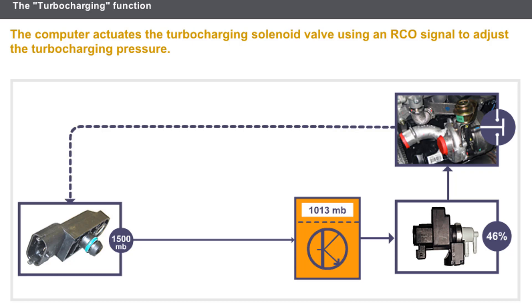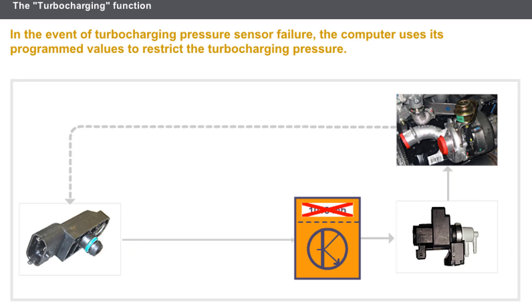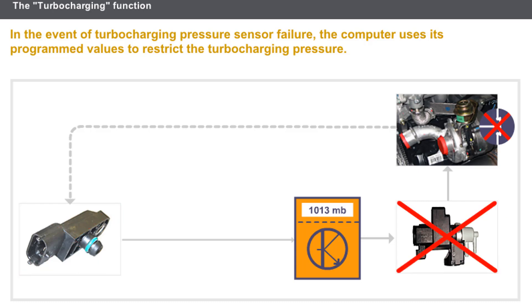The computer checks the control action via the pressure sensor. The atmospheric pressure allows the turbocharging pressure to be adjusted. There is no defect mode for the atmospheric pressure sensor. In the event of turbocharging pressure sensor failure, the computer uses the control values to restrict the turbocharging pressure. In the event of a fault on the electrical or pneumatic circuit for the regulation system control, the computer restricts the engine performance.